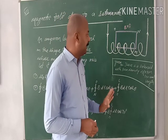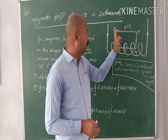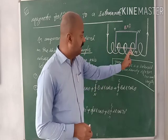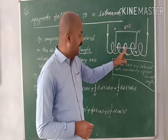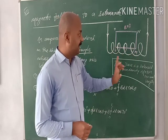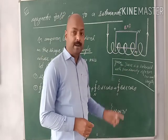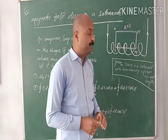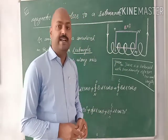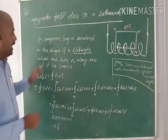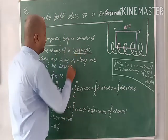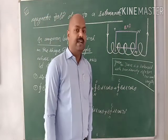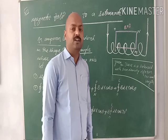Here we imagine an Amperian loop L, M, N, O. This Amperian loop: side LM is along the direction of the magnetic field, MN is perpendicular to the direction of the magnetic field, NO is parallel to the direction of the magnetic field, and OL is perpendicular to the direction of the magnetic field. So the Amperian loop is considered in the shape of a rectangle.